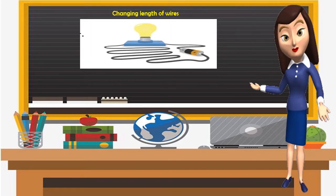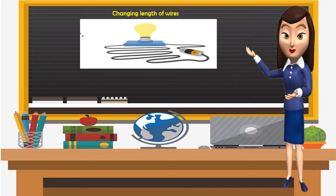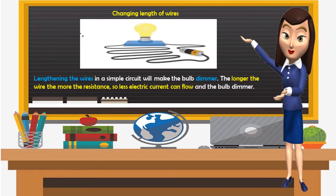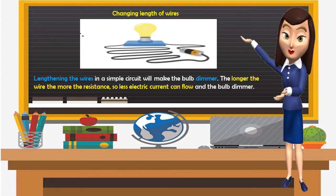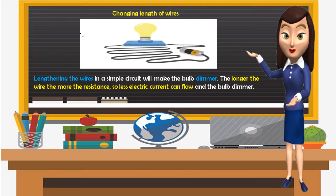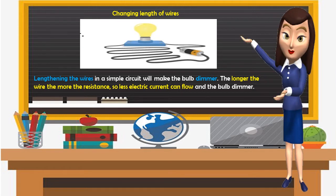Changing the length of wires: lengthening the wires in a simple circuit will make the bulb dimmer. The longer the wire, the more the resistance, so less electric current can flow and the bulb becomes dimmer.